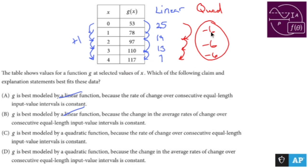So this is a quadratic. But why? Because the rate of change over consecutive equal length input values is constant, or because the change in the average rates of change over the consecutive equal length input intervals is constant, that's the guide.